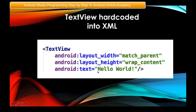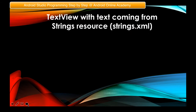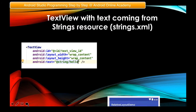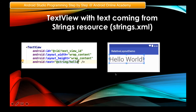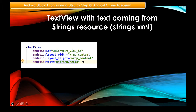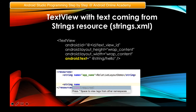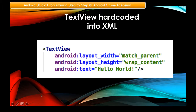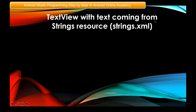This is the hard-coded approach. When you go to the design editor, you will find the text 'Hello World' displayed. The hard-coded 'Hello World' would look like this in your design view. Now, moving on from the hard-coded part, we go to TextView with text coming from a strings resource, or strings.xml inside your resources folder.